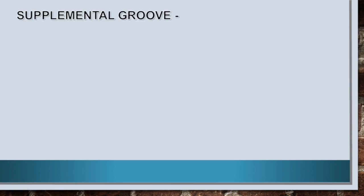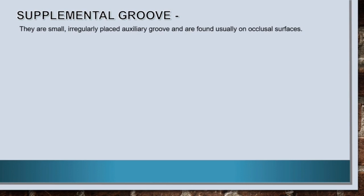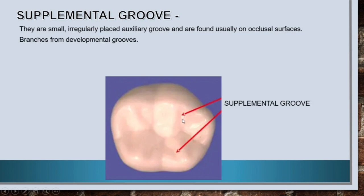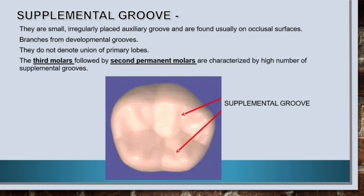Now let's know about supplemental grooves. They are small, irregularly placed auxiliary grooves found usually on occlusal surfaces, and branch from developmental grooves. They do not denote union of primary lobes. The third molar, followed by second permanent molars, is characterized by a high number of supplemental grooves.